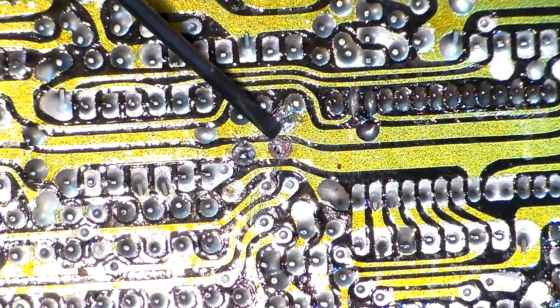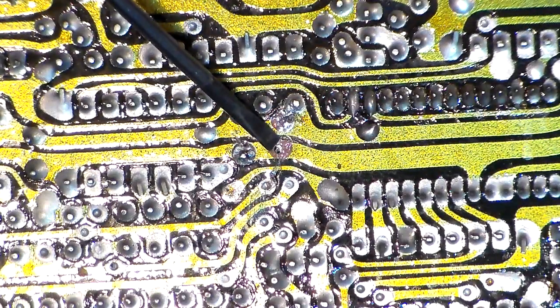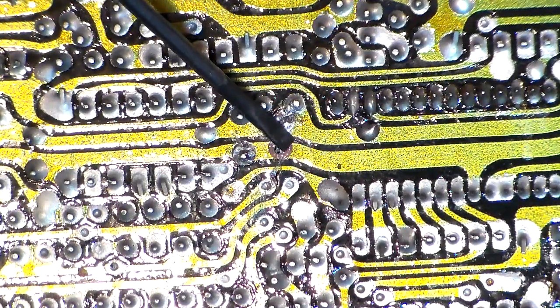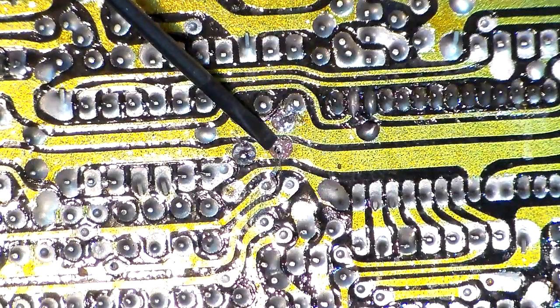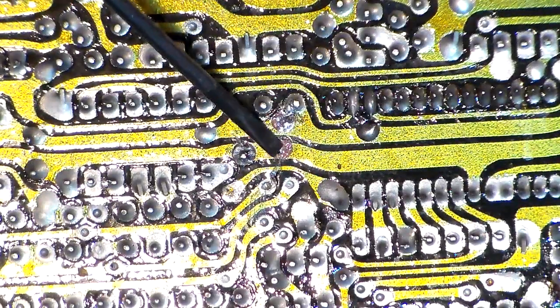Once I melted and removed the solder from this particular connection, if you look, it's just copper colored. There's no solder, no silver there.